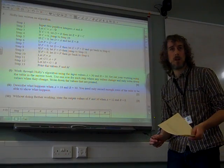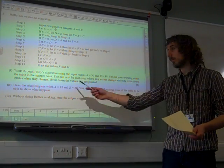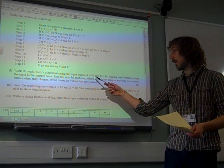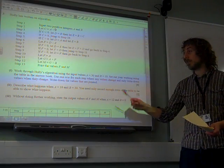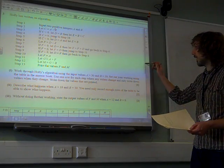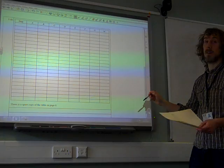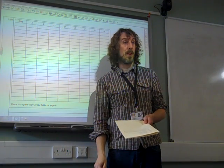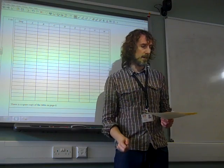You have to be so careful because the instructions here are really strict. Use the table, use one row for each step where any values change, and only write down values when they change. Write down the values that are printed. The bit that I missed first when I looked at this is we actually have a column here to write down the steps. And that seems really irritating to do that.